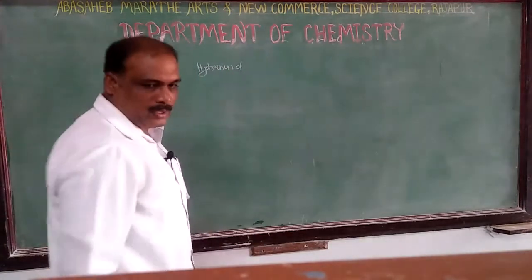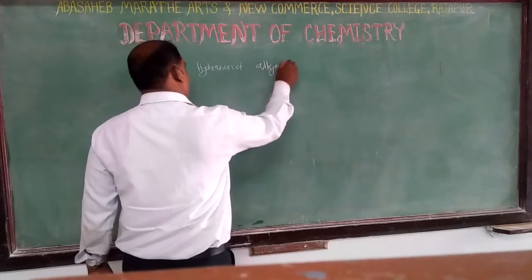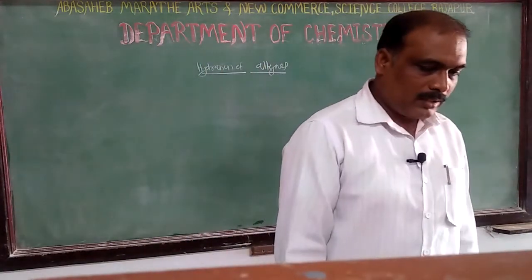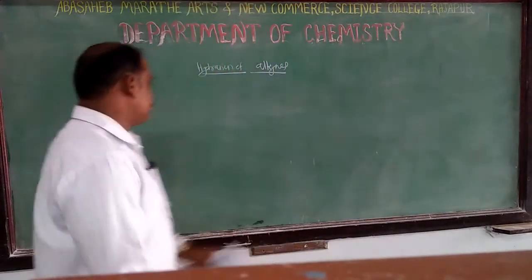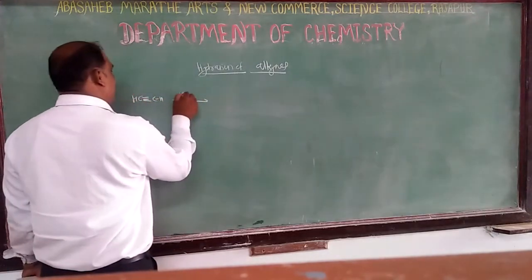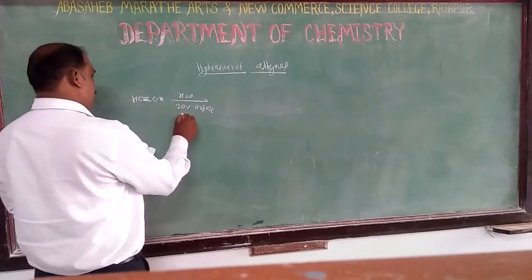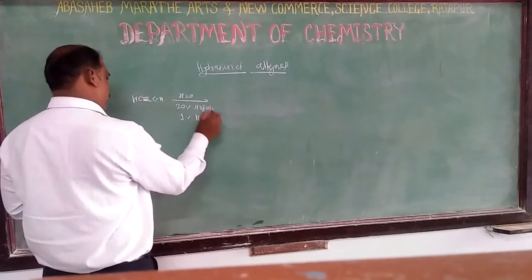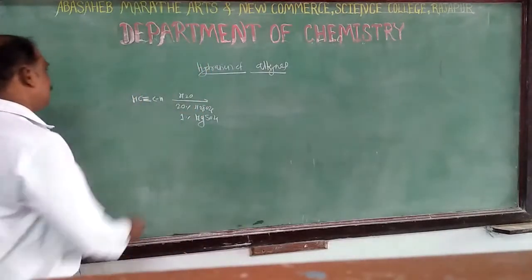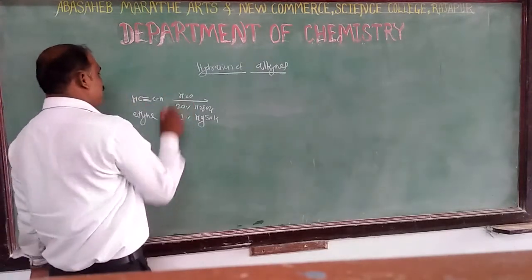Hydration of alkynes: for example, ethyne can be treated with water in the presence of 20% sulfuric acid (H₂SO₄) and 1% mercuric sulfate (HgSO₄). These are the reagents used for the hydration of ethyne.